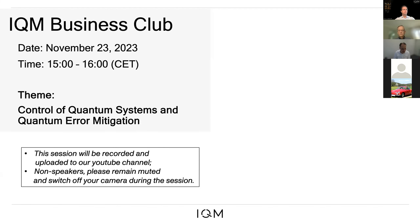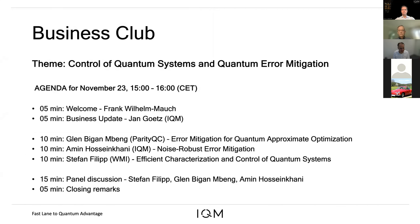We're currently in the welcome remarks, and then there's a business update from an IQM representative. We have three speakers who will address three levels: the computer science level, the theoretical physics level, and the experimental physics and engineering level of getting the most out of your hardware — addressed by Glenn Bang, Armin Hosseinkani, and Stefan Philip. They will come together to discuss those topics and then we will close.